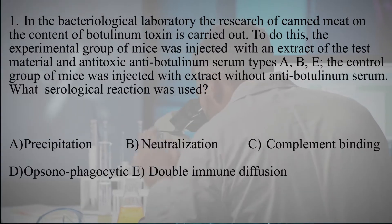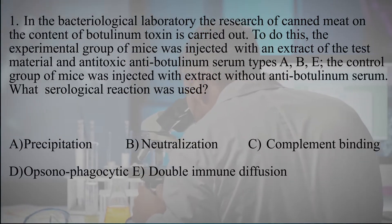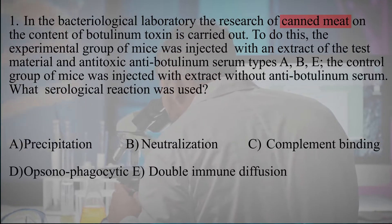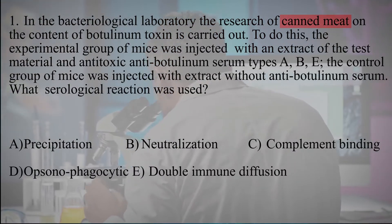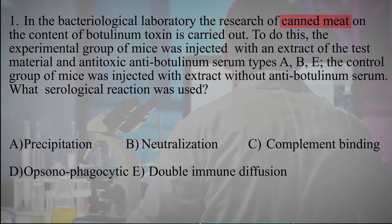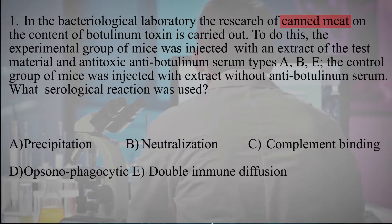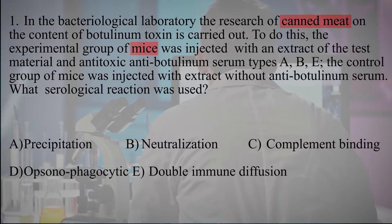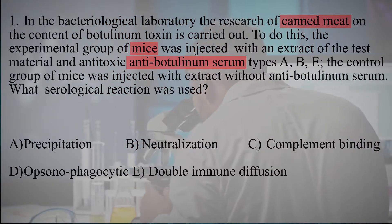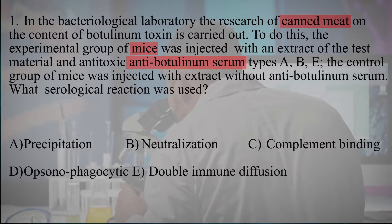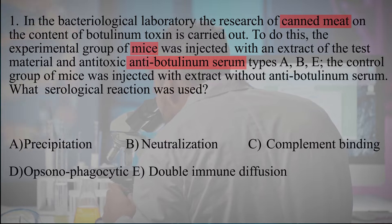In the bacteriological laboratory, research of canned meat on the content of botulinum toxin is carried out. The experimental group of mice was injected with an extract of the test material and antitoxic antibotulinum serum types A, B, and E. The control group of mice was injected with extract without antibotulinum serum.